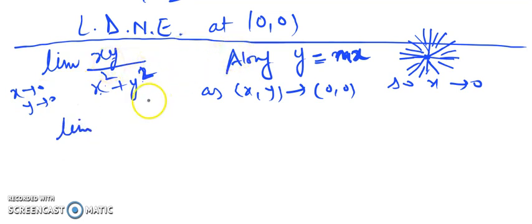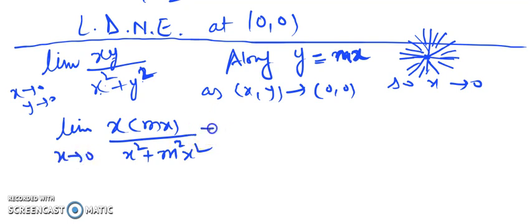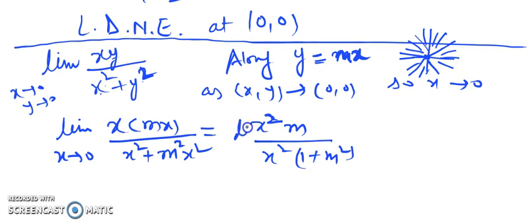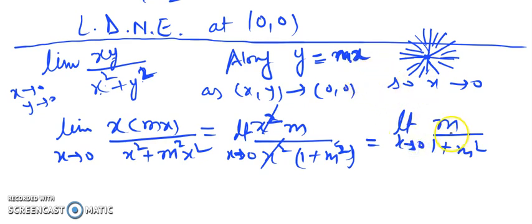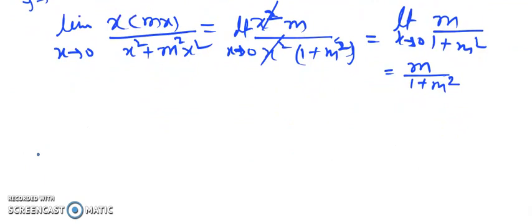Along y = mx, as (x, y) → (0, 0), x also tends to 0. The expression becomes x·(mx) / (x² + m²x²) = mx²/(x²(1 + m²)). After cancelling x², we get m/(1 + m²). The limit as x → 0 of the constant m/(1 + m²) is m/(1 + m²).